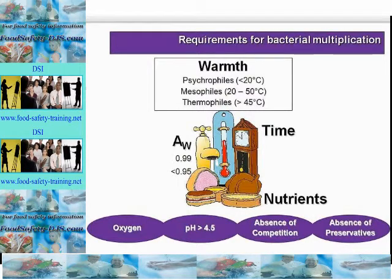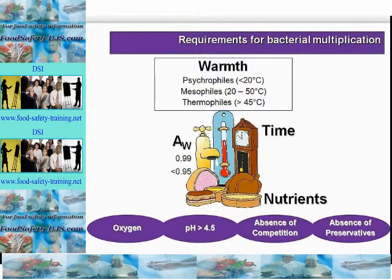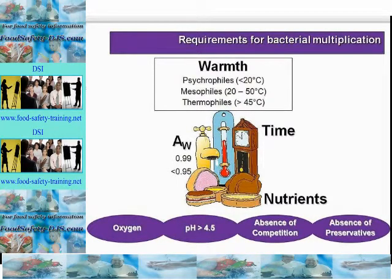Bacteria reproduce by binary fission — splitting into two. The time taken for a complete cell cycle, effectively the number of bacteria doubles, is called the generation time or TG. Under optimum conditions it can be every 10 minutes, meaning from 1,000 to 1 million in 1 hour 40 minutes. Where TG equals 10 minutes, one pathogen will become approximately 17 million in just 4 hours. For example: Salmonella at 37°C has a TG of 20 minutes, but at 10°C the TG equals 10 hours. E. coli O157 and Clostridium perfringens at 45°C have a TG of 10 minutes.